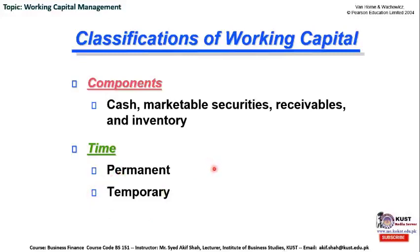By permanent we mean that certain levels of current assets — which are cash, marketable securities, receivables, and inventory — will be available in the balance sheet all the time during an accounting period. Normally, a company has a certain level of cash available in its treasury or bank account. Similarly, the company might have investments in marketable securities, and there are credit sales, so receivables are present all the time. There could also be a certain level of inventory always present in the company. That portion of current assets is known as permanent current assets.